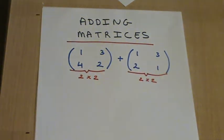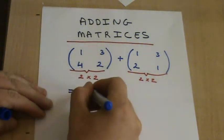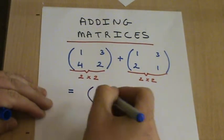You can only add matrices if they both have the same order. You can see both of these matrices are 2x2 matrices, so the resulting matrix will also be a 2x2 matrix.